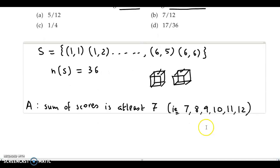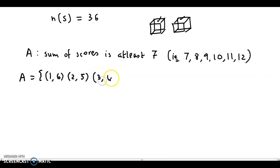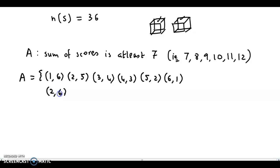Let's count the favorable outcomes for each total. For sum 7: (1,6), (2,5), (3,4), (4,3), (5,2), (6,1) — that's 6 outcomes. For sum 8: (2,6), (3,5), (4,4), (5,3), (6,2) — that's 5 outcomes. For sum 9: (3,6), (4,5), (5,4), (6,3) — that's 4 outcomes.